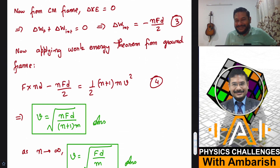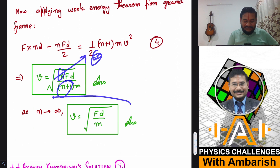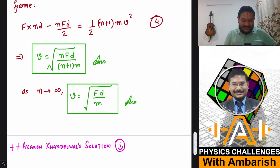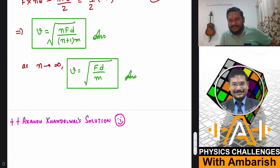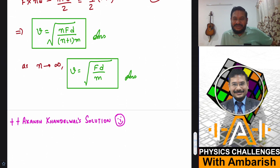The second part is easy — making n tend to infinity, n divided by (n+1) goes to 1, giving the final answer v equals the square root of F d divided by m. That was my solution. Apart from my solution, Akanj Khandelwal also presented a beautiful solution using a kind of recursion and the limit that when n tends to infinity, the velocity at the nth step equals the velocity at the n+1st step. I'll give a link to the community post so you can see his proposal.